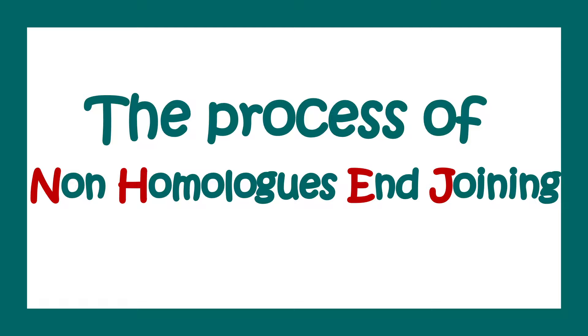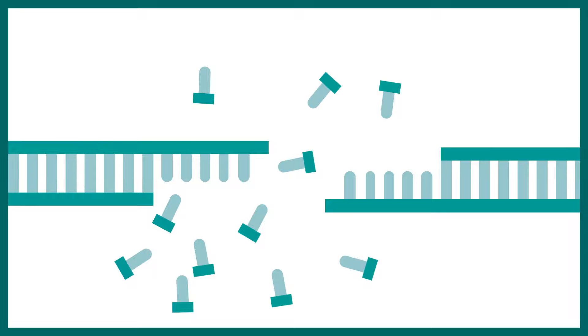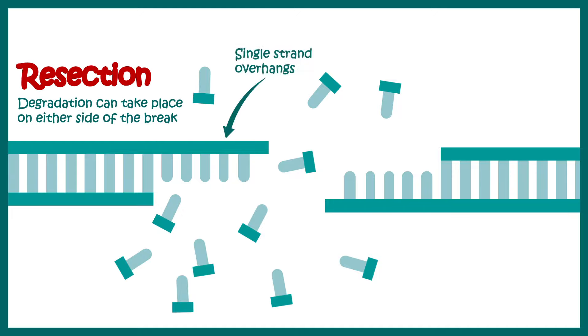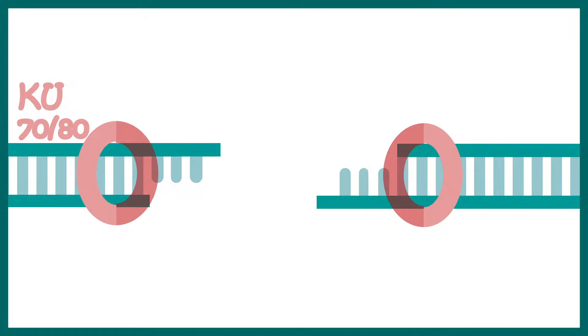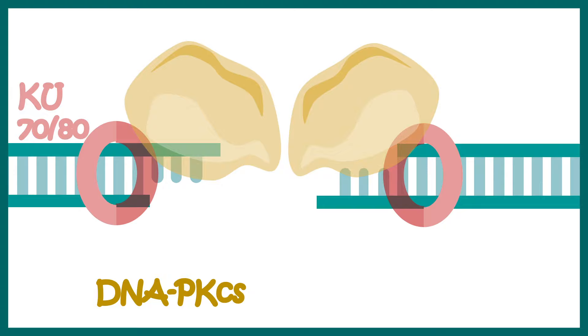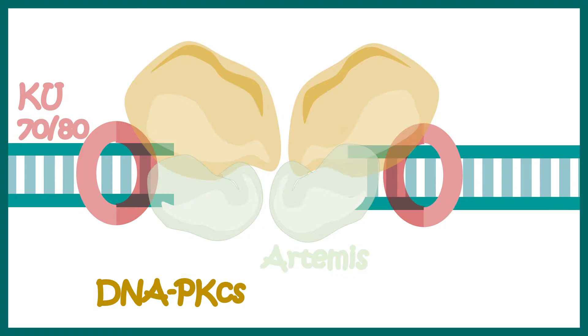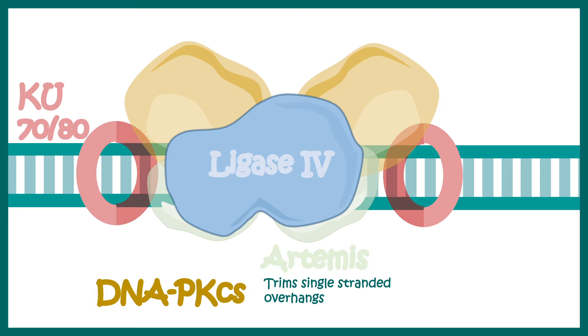Let's look at the overall mechanism of non-homologous end joining. Near the break site there would be loss of some nucleotides — this process of loss of nucleotides is known as resection. This leads to the production of single-strand overhangs. Proteins like Ku70 and Ku80 heterodimers are recruited to these broken ends. Ku70 and Ku80 further recruit DNA protein kinase catalytic subunits, which in turn recruit Artemis. Artemis gets phosphorylated by DNA-PKcs and can trim the ends of these overhangs.